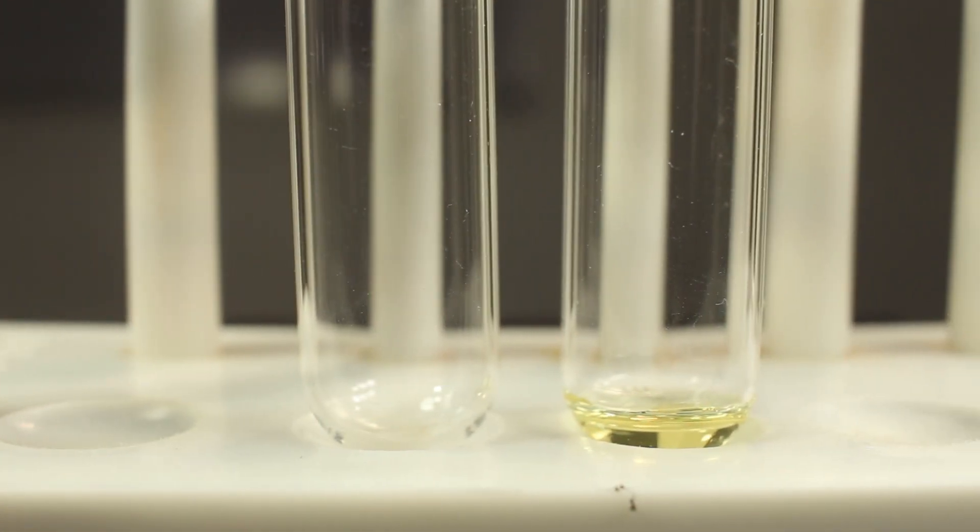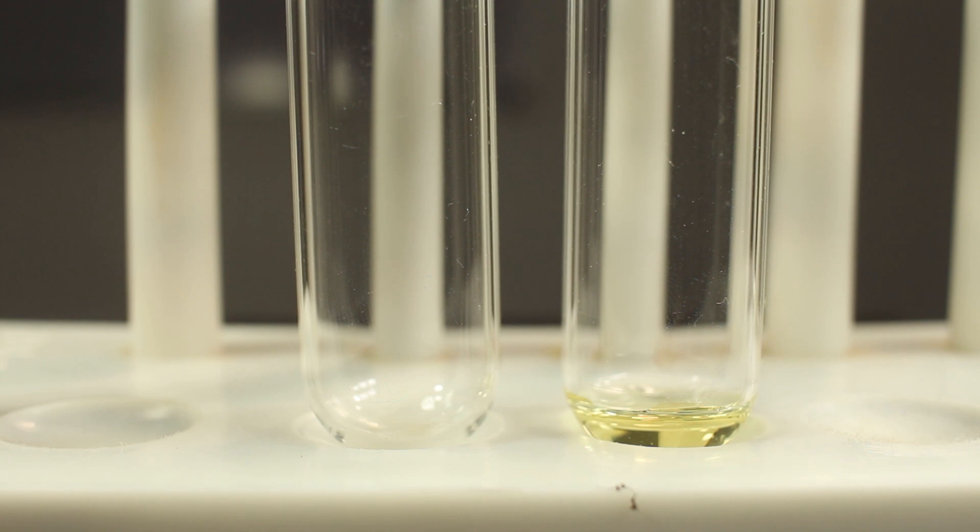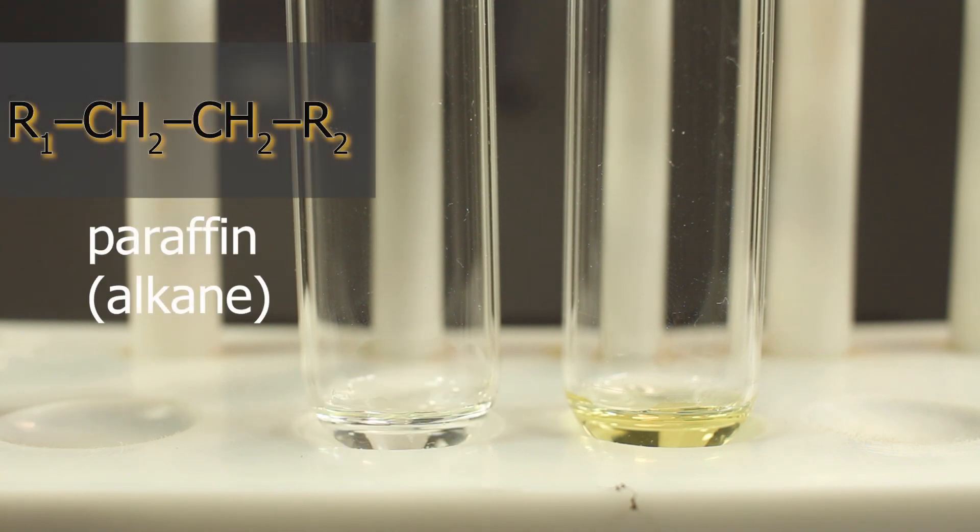As a control, we take paraffin, which doesn't have any double bonds between carbons, though the chains are almost equally long.